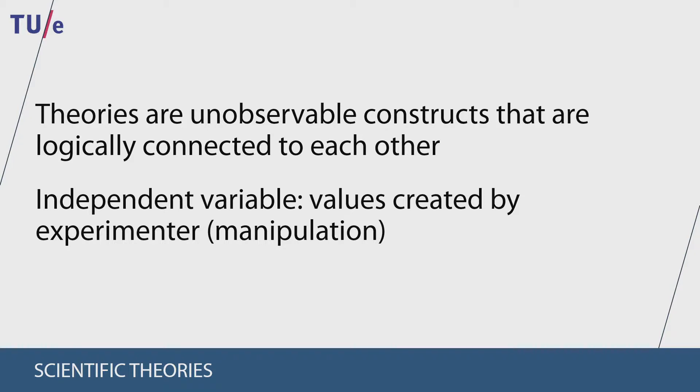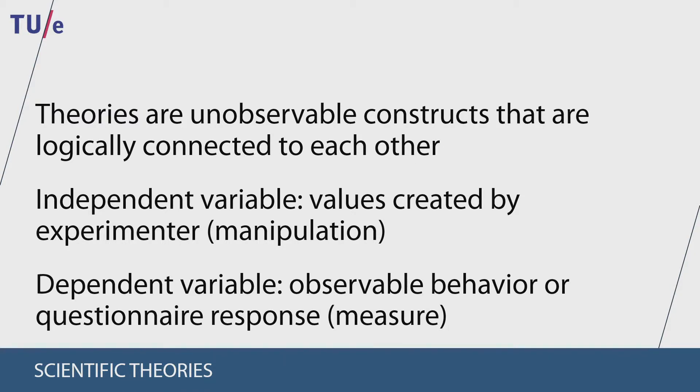We usually call this a manipulation. A dependent variable is any observable behavior or questionnaire response a person can provide. We usually call this a measure.